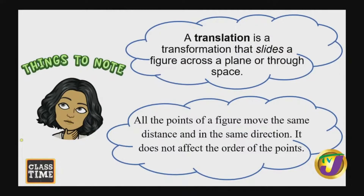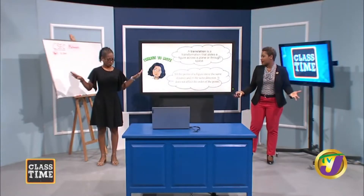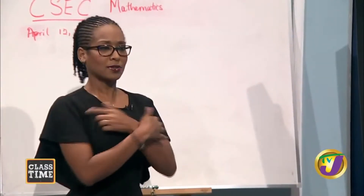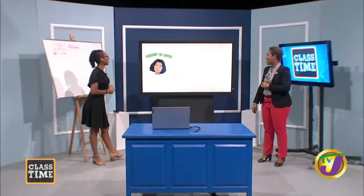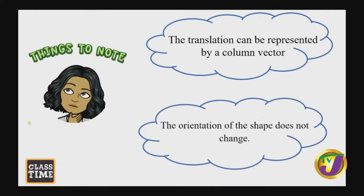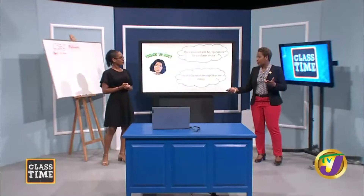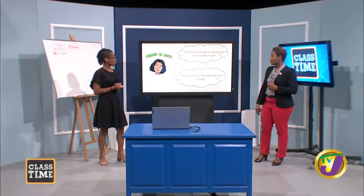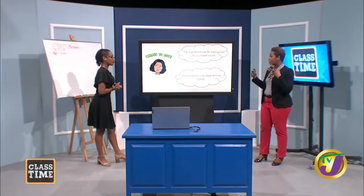All points of a figure move the same distance and in the same direction — it does not affect the order of the points. When we moved to the left and right, we were intact. The translation can be represented by a column vector. And the orientation of the shape does not change — which we already concluded from our activity. These are important points to remember going forward.